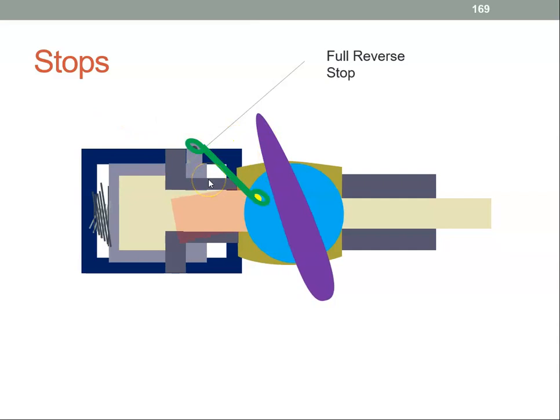Anything in between, like a fine pitch stop somewhere here or a ground fine pitch stop somewhere here or a cruise stop which would be somewhere here, we need some other mechanism to stop the propeller. We'll look at those in different videos.